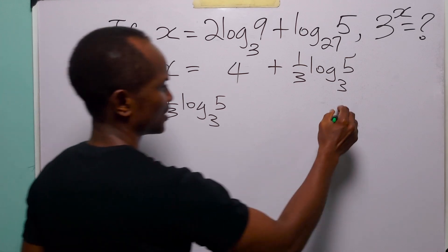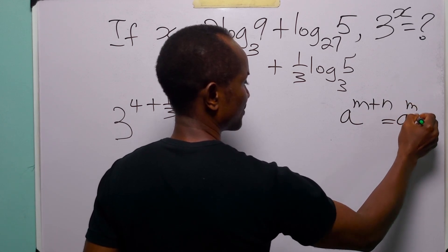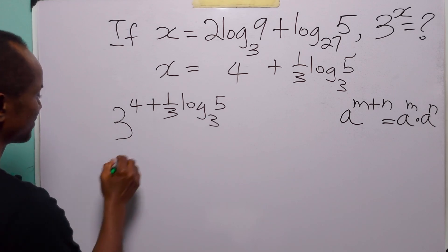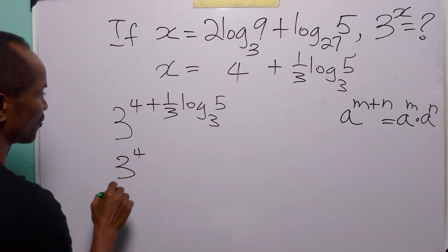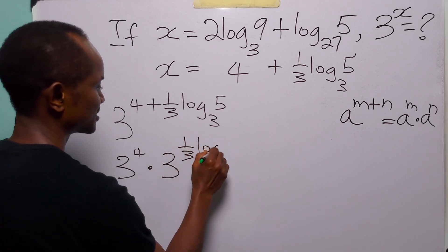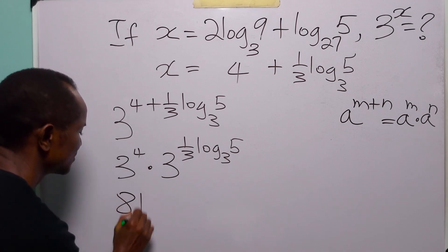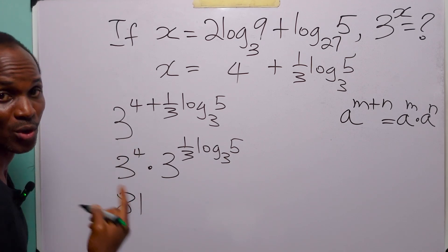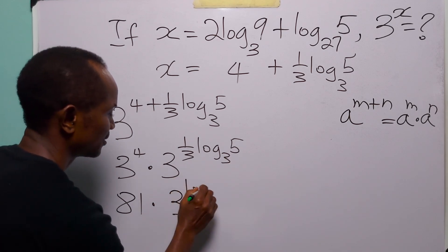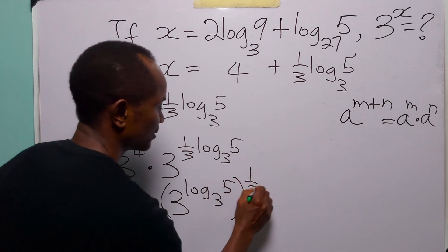We use the exponent rule: a to the power m plus n equals a to the power m multiplied by a to the power n. So this becomes 3 to the power 4 multiplied by 3 to the power of one-third times log to base 3 of 5. And 3 to the power 4 equals 81, so we have 81 multiplied by 3 to the power of log to base 3 of 5, all raised to the power one-third.